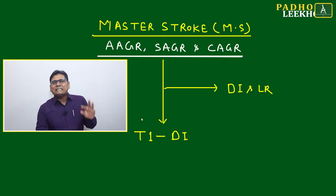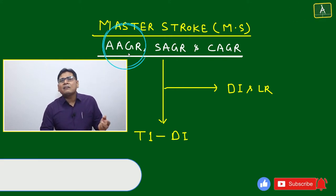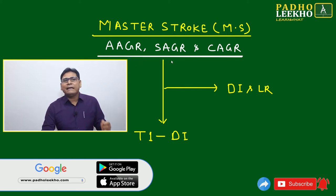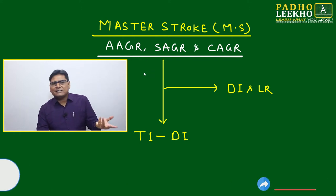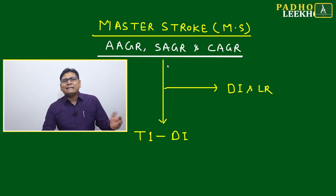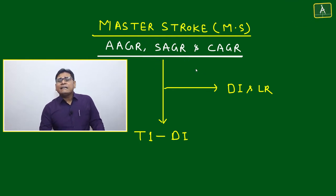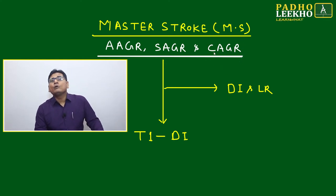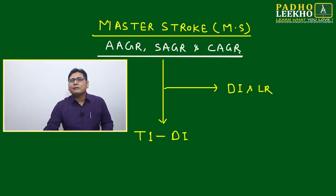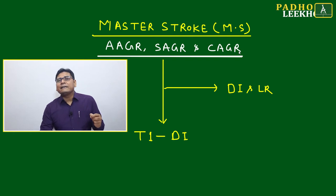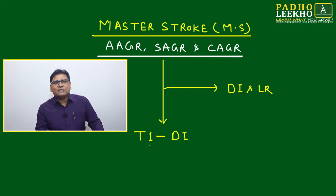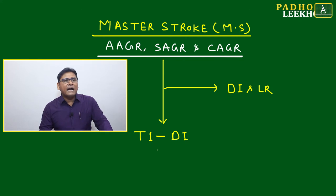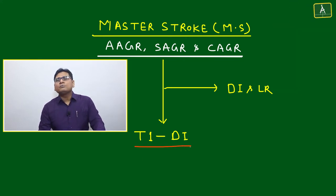Growth rate is measured in three different ways. First is AGR — Annual Average Growth Rate. Second is SGR — Simple Annual Growth Rate. Both AGR and SGR are mathematically the same, just different in terminology. Third is CAGR — Compound Annual Growth Rate — which is the actual return rate. For example, if you are putting money in share investment, your return rate is your CAGR.